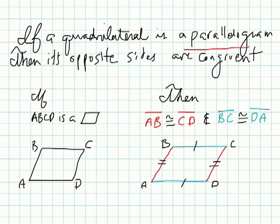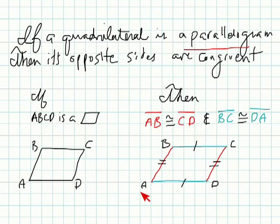Basically, if ABCD is a parallelogram — this is the symbol for a parallelogram — which means these two walls are parallel, then AB will be congruent to CD, and BC is congruent to AD. So when you have a parallelogram, their opposite sides are congruent to each other.